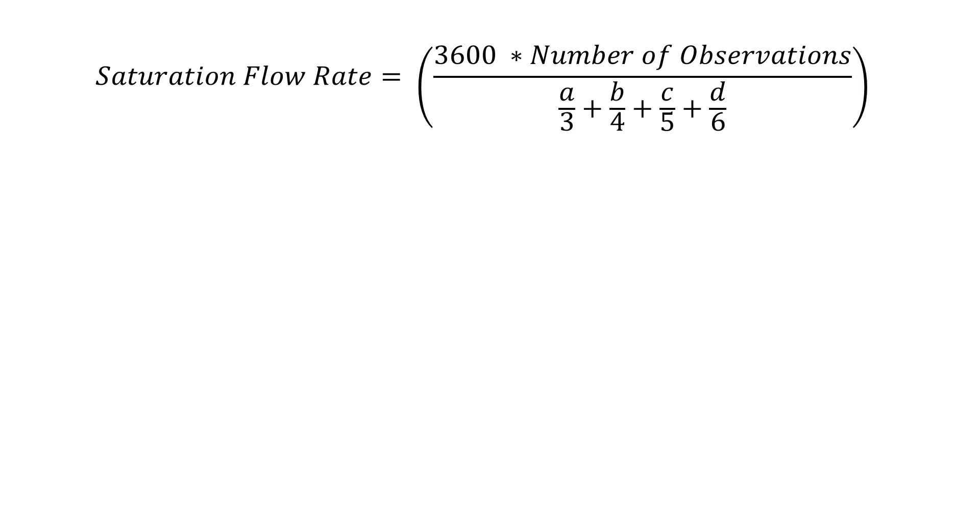We're going to divide each column in the denominator by the number of vehicles that were observed between the 4th and either the 7th, 8th, 9th, and 10th. So, for instance, column B was associated with the 8th vehicle, so the time difference in seconds between the 4th and the 8th, and there's four vehicles that were observed. That's why we're dividing those seconds by 4.